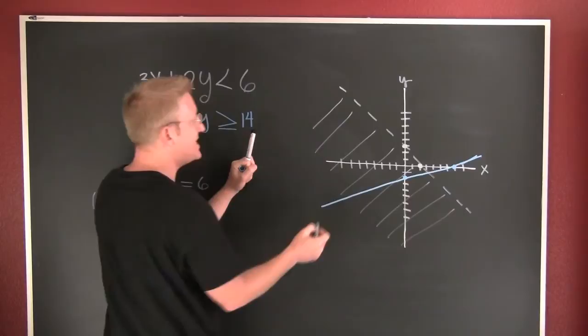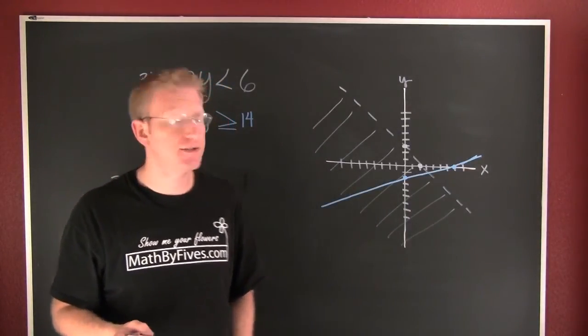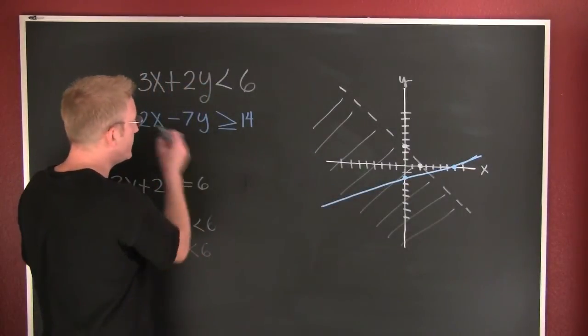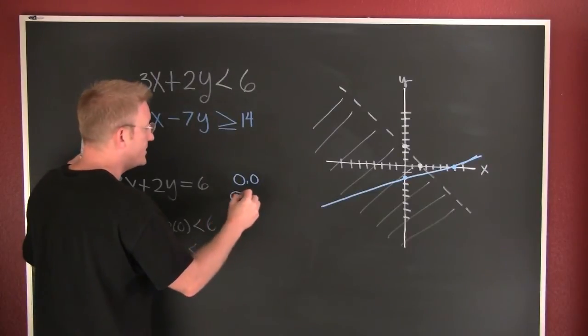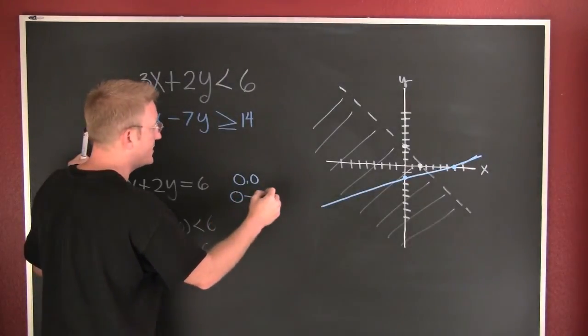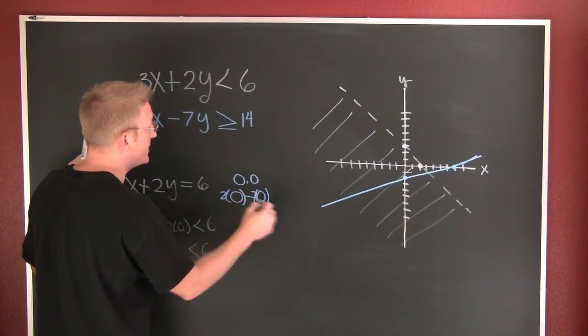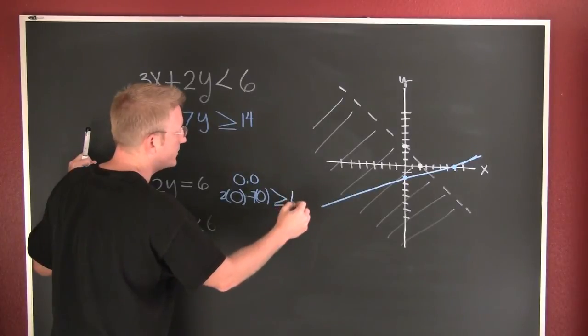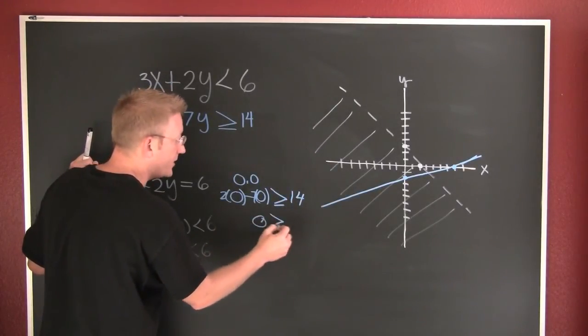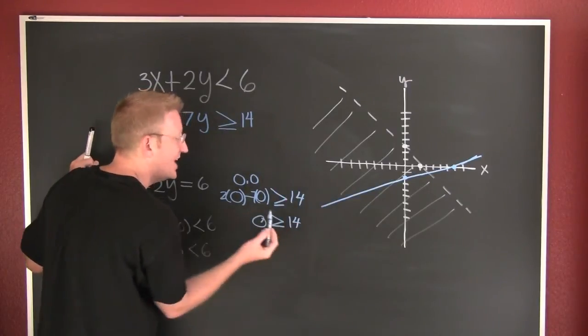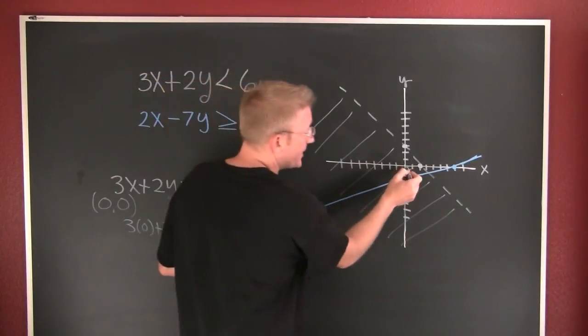Now I need to test the point zero zero is a good point to test on this one, so I'm going to go through and I'm going to do that. I'm going to test zero zero, I'm going to put it in the blue one: zero minus zero, well seven times zero and two times zero, is that bigger than or equal to 14? What I want to know is, is zero bigger than or equal to 14? That's a false statement, so no, that is not true.